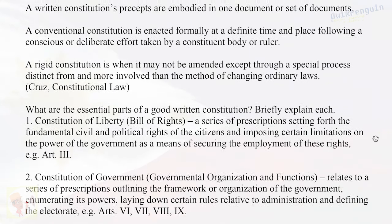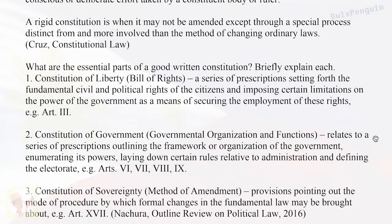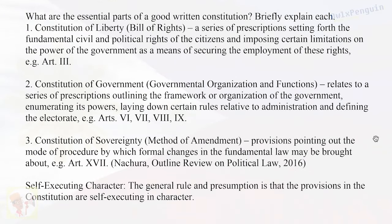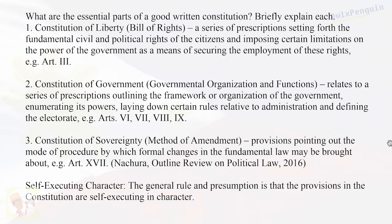What are the essential parts of a good written Constitution? First, the Constitution of Liberty or Bill of Rights — a series of prescriptions setting forth the fundamental civil and political rights of the citizens and imposing certain limitations on the power of the government as a means of securing the enjoyment of these rights. (e.g., Art. 3)